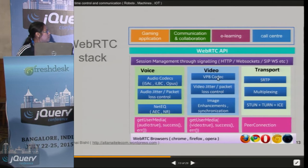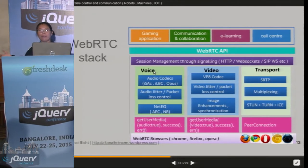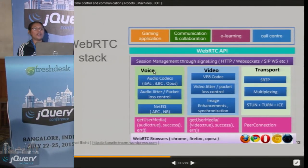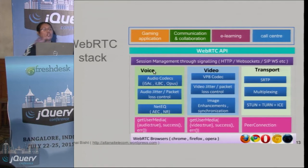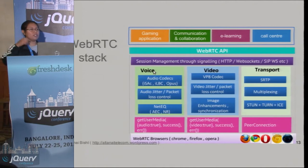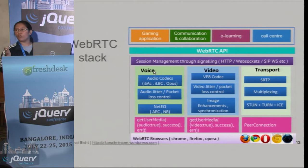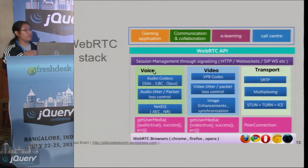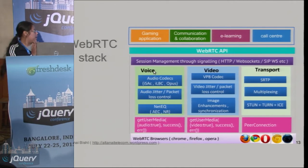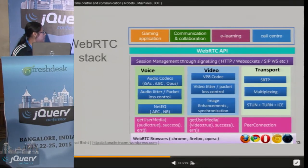This is the problem. The codec supported by WebRTC is not the codec supported by the majority of machines. The majority of machines — like the webcams, the streaming servers — support H264, generic old protocols. But WebRTC came out with VP8 and Opus.